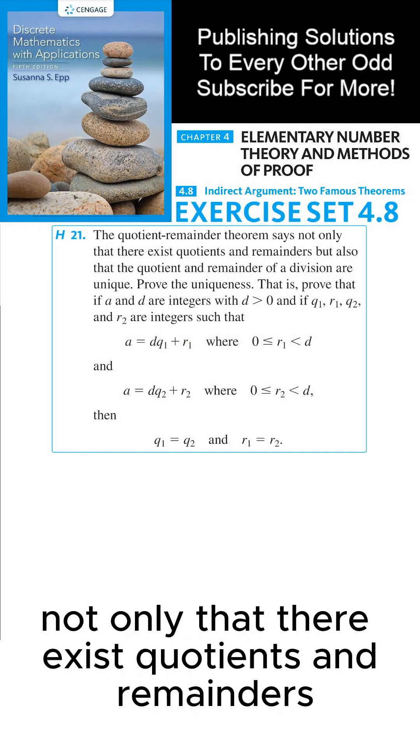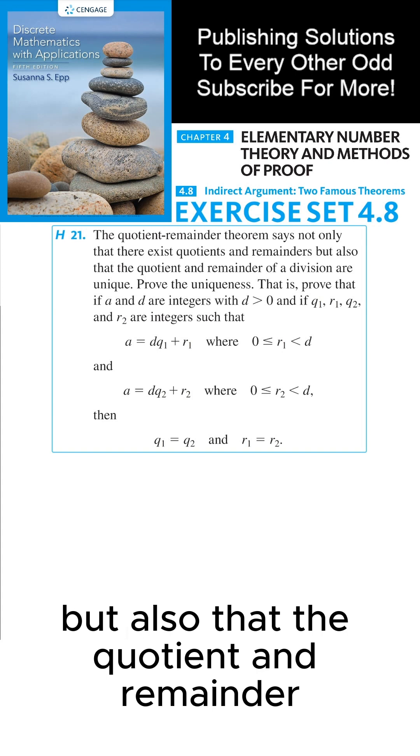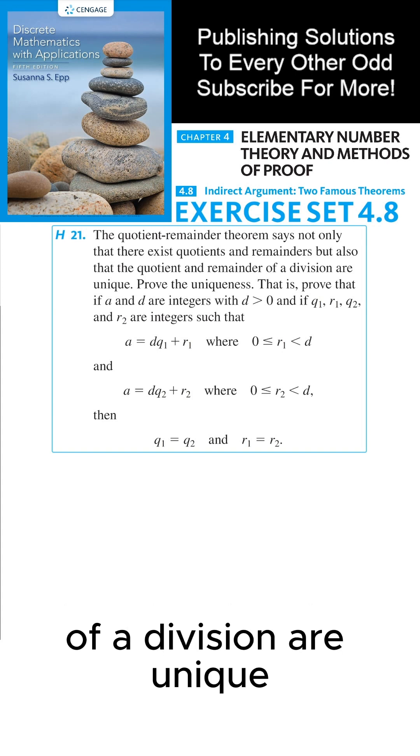The quotient-remainder theorem says not only that there exist quotients and remainders, but also that the quotient and remainder of a division are unique. Prove the uniqueness.